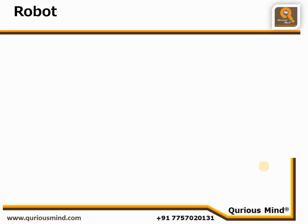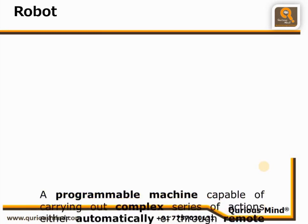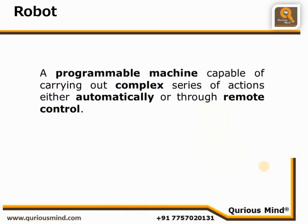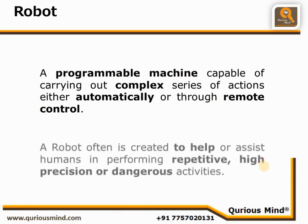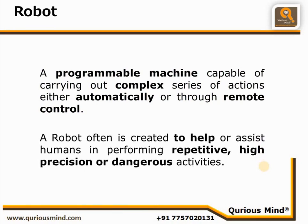The word robot comes from the Czech word 'Robota,' which means forced labor. The term robot was first used in 1921 in the play Rossum's Universal Robots. A robot is defined as a programmable machine capable of carrying out complex series of actions either automatically or through remote control. A robot is often created to help humans in performing repetitive, high precision, or dangerous activities. Key points to note are the highlighted words — a machine is called a robot only when it satisfies this criteria.